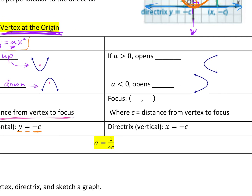The other equation is x equals a times y squared. So your x's and y's just switched. If your a is positive, it's going to open to the right. If your a is negative, it's going to open to the left. And now your focus just flip-flops — just like your x and y flip-flopped, your focus flip-flops. So instead of (0, C), now your focus is (C, 0). C is still going to be the distance from the vertex to the focus. Your directrix for this one, because you're opening left or right, now it has to be a vertical line: x equals the opposite of your C value.